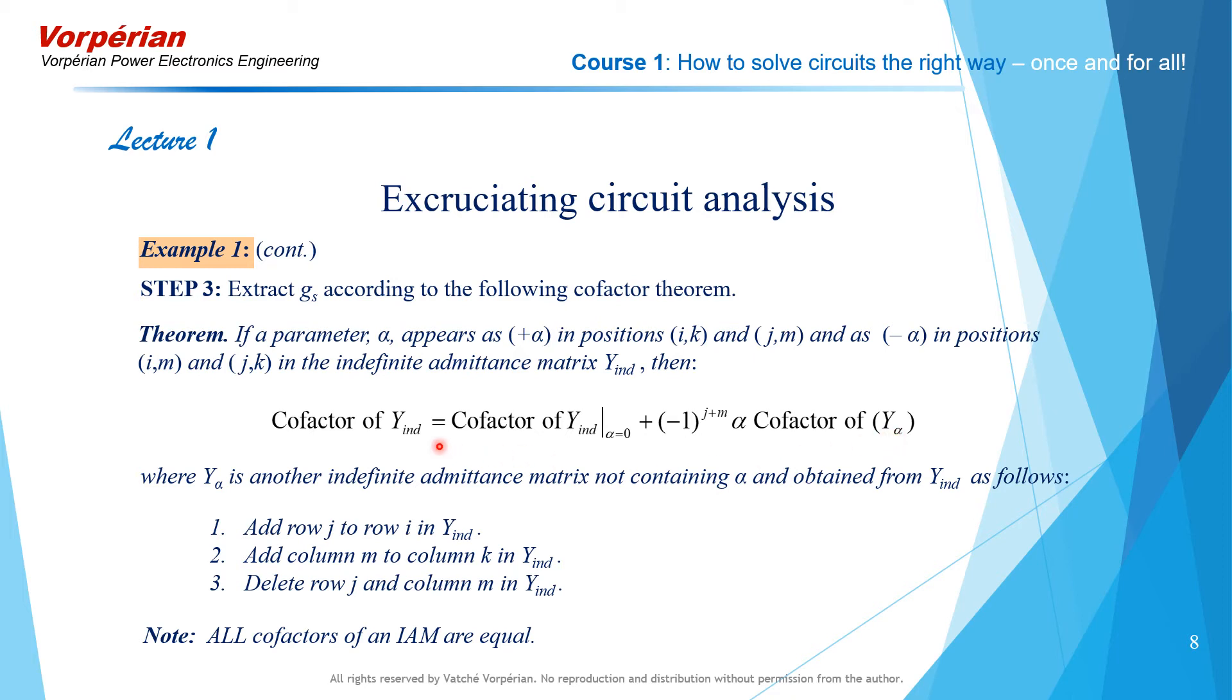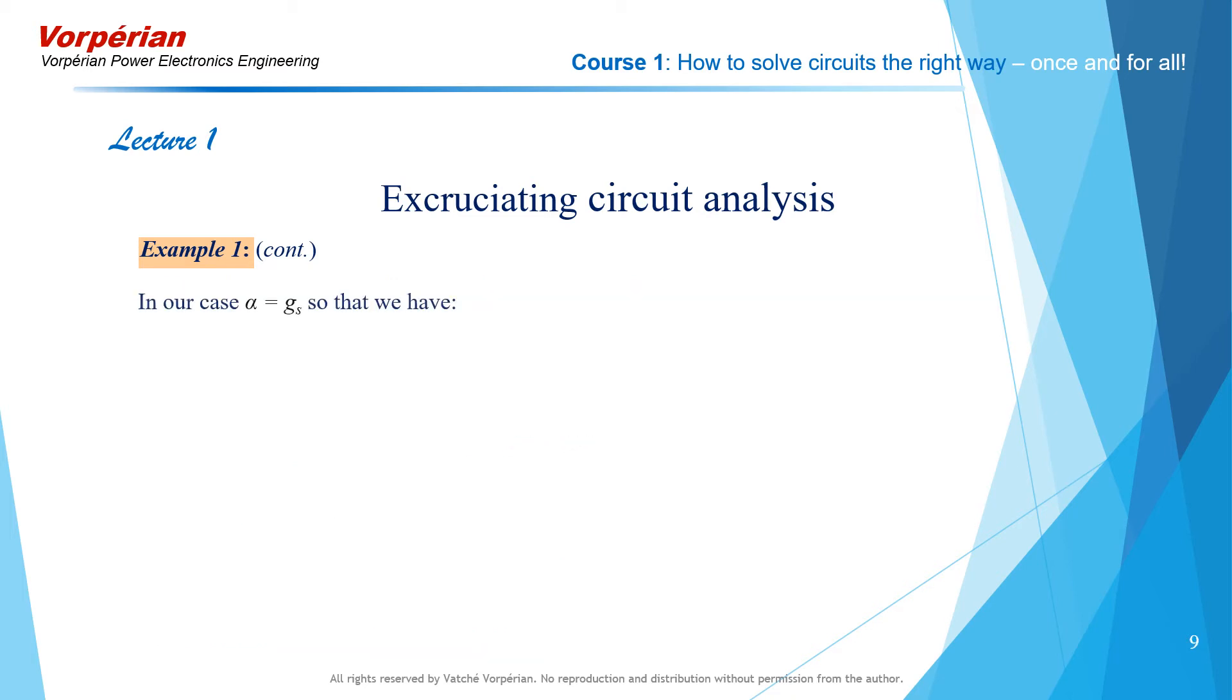All cofactors of an indefinite admittance matrix are equal. In our case, in the first time around, alpha is equal to Gs.